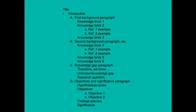In the introduction section we have A, B, C, and D. A is the first background paragraph, B is the second background paragraph, C is the knowledge gap paragraph, and D is the objectives and significance paragraph. Your introduction might have more than four paragraphs — if so, just add a third background paragraph to this outline.